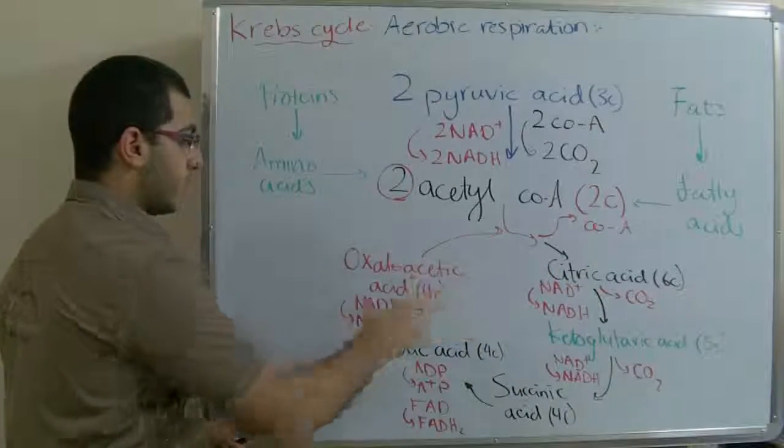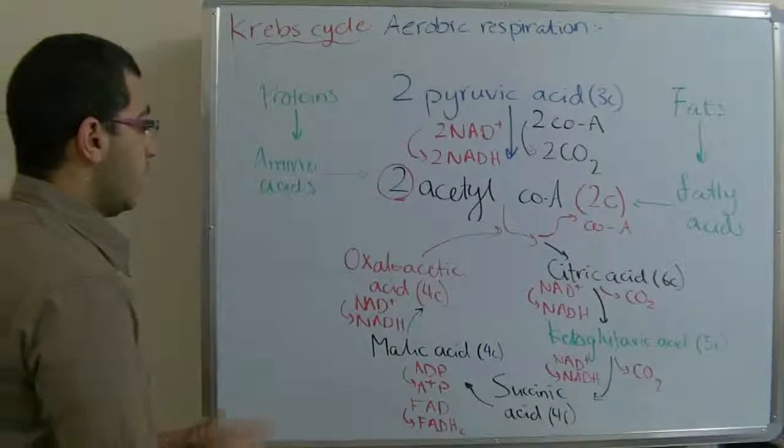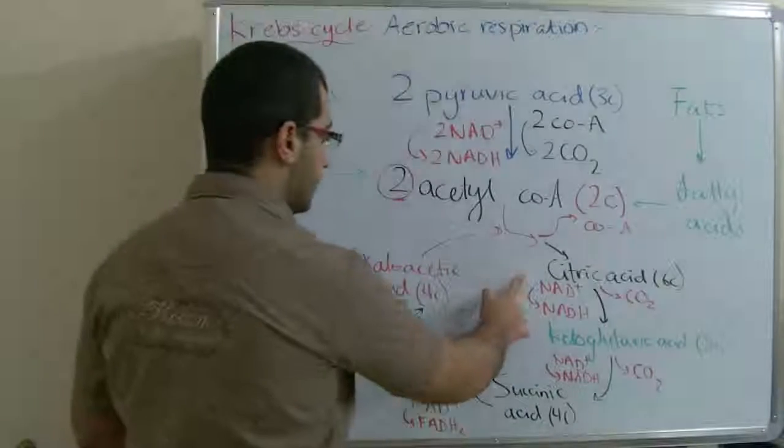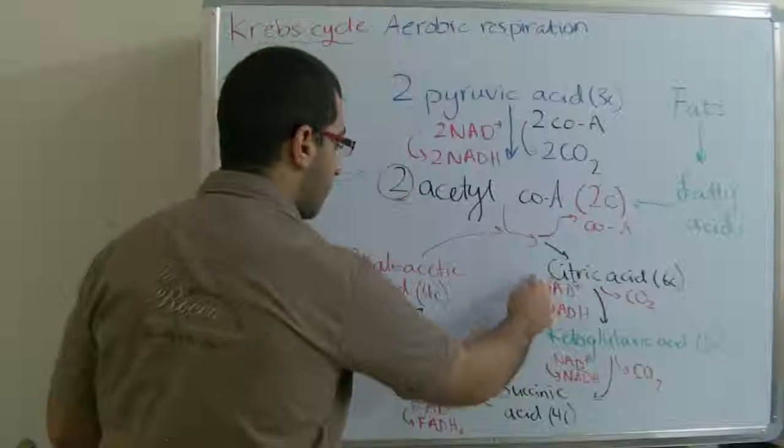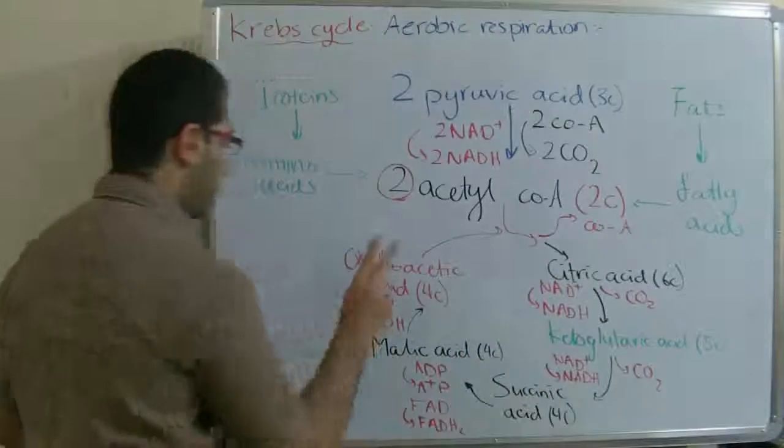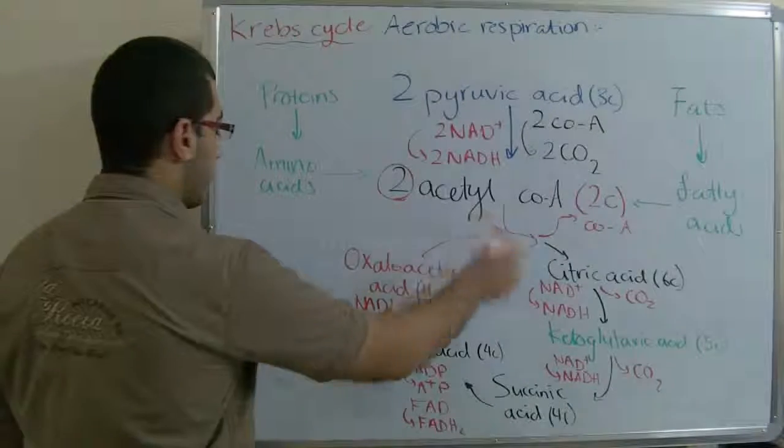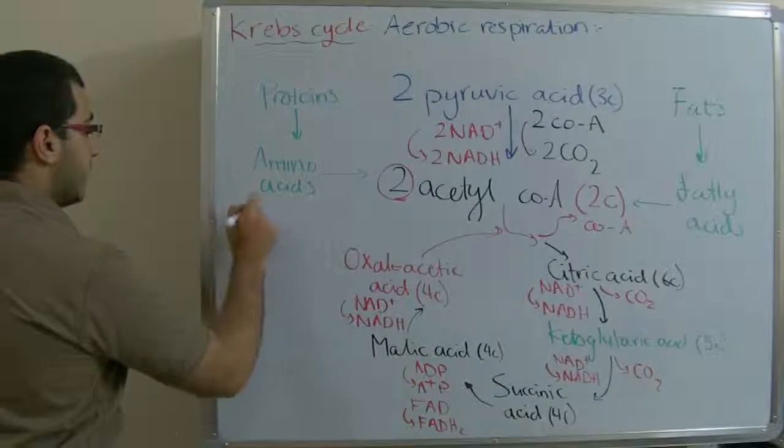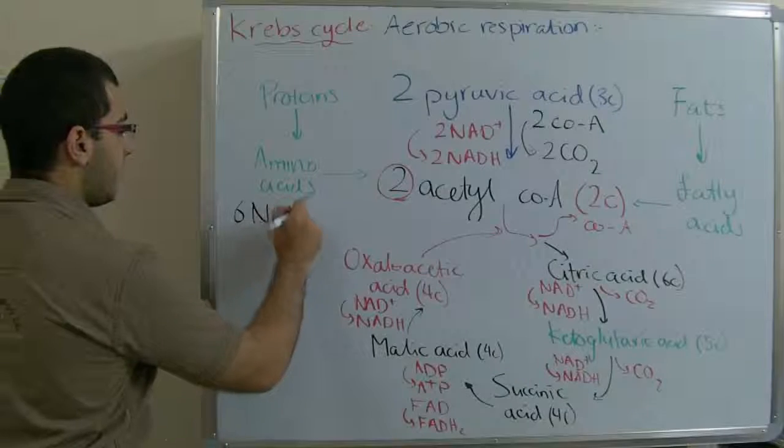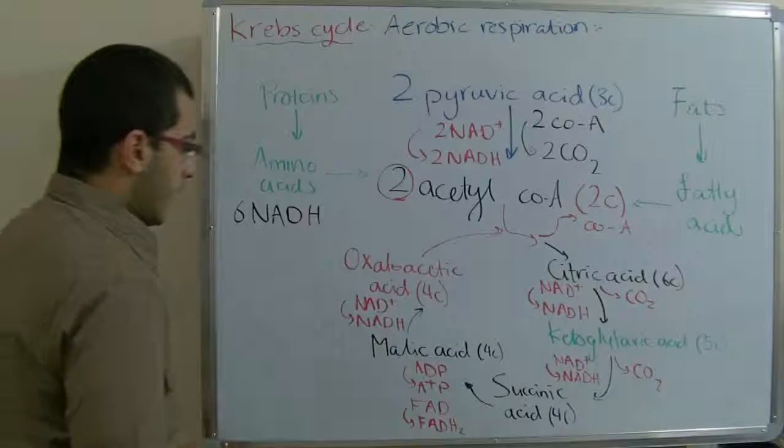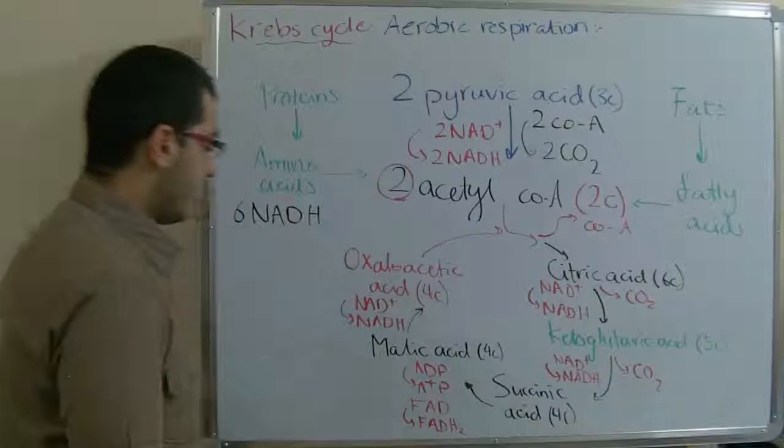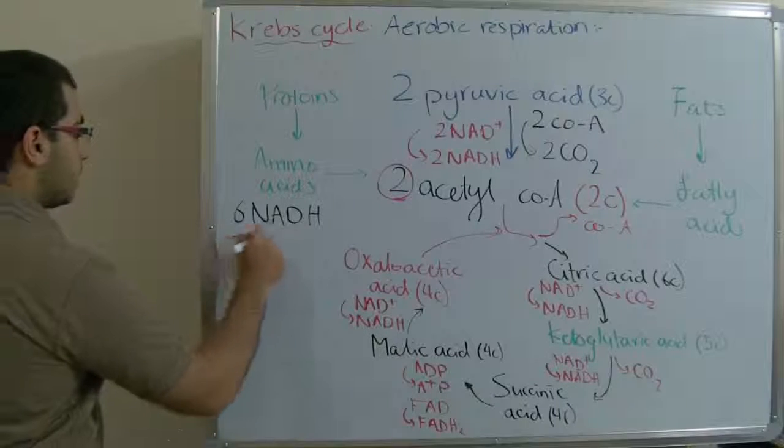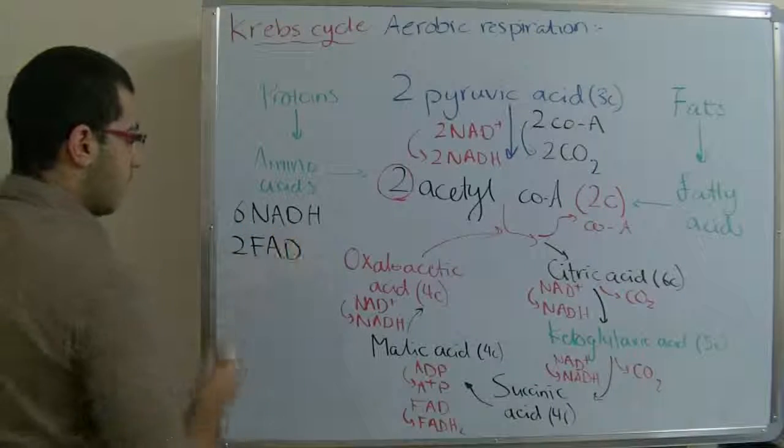If you calculate the number of the NADH produced, we have one, two, three multiplied by two because it's repeated twice, we have six NADH. FAD we have only one by two, we get two FADH2.